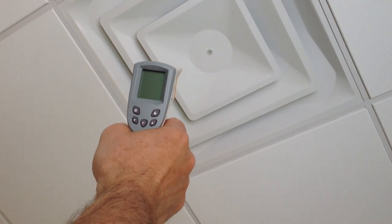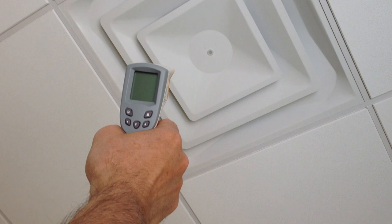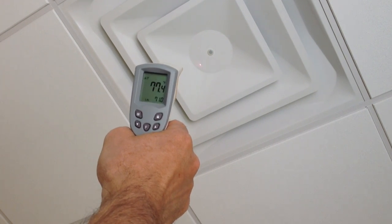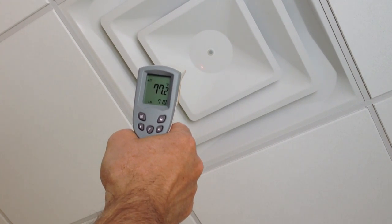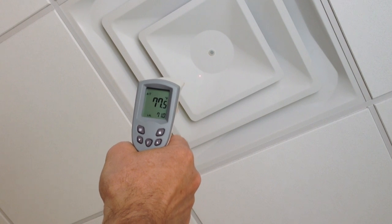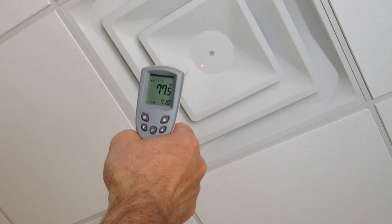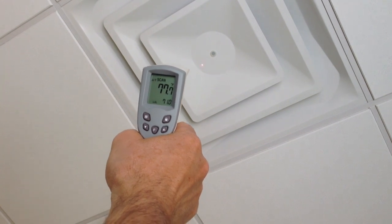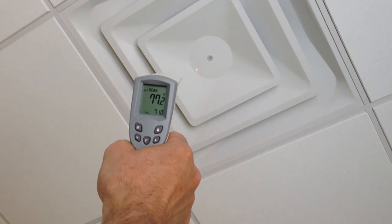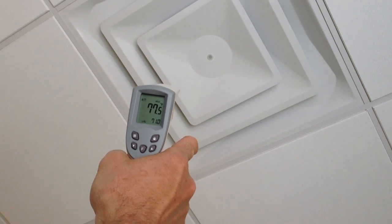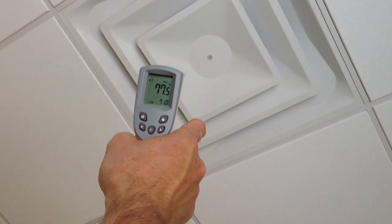To take a temperature measurement, simply hold the IR gun, press the trigger, and aim the laser guide at the target. Results immediately appear in C or F on the backlit LCD. Temperature readings are continually updated while the trigger is held. Once the trigger is released, the final temperature continues to be held for six seconds.